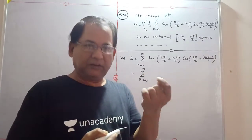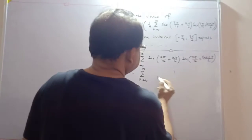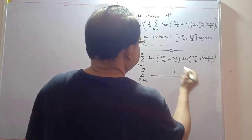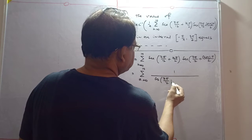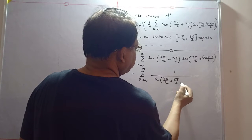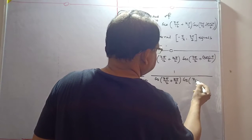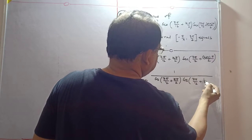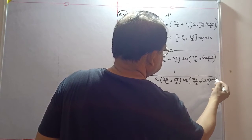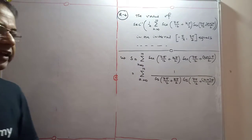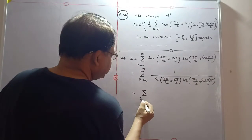Now sec(θ) means 1/cos(θ), so you can write S as the summation of 1 divided by cos(7π/12 + kπ/2) multiplied by cos(7π/12 + (k+1)π/2).